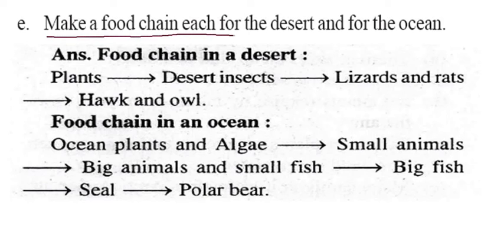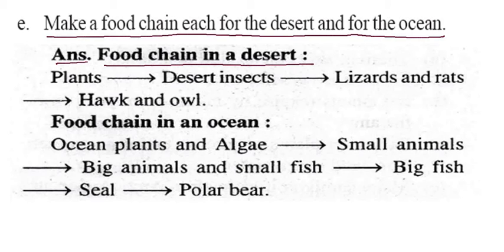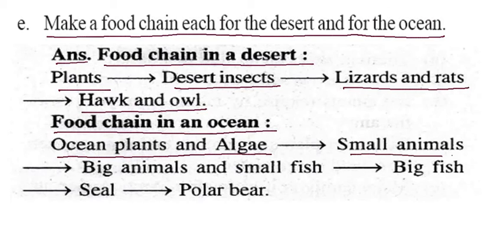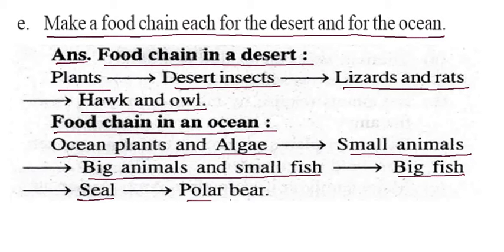Make a food chain each for the desert and the ocean. Food chain in a desert: plants are eaten by desert insects, desert insects are eaten by lizards and rats, and lizards and rats are eaten by hawks and owls. Food chain in the ocean: ocean plants and algae are eaten by small animals, small animals are eaten by big animals and small fishes, big animals and small fishes are eaten by big fishes, big fishes are eaten by the seal, and the seal is eaten by the polar bear.